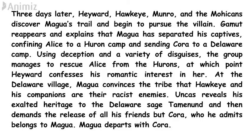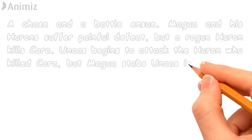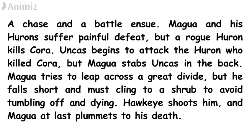Uncas reveals his exalted heritage to the Delaware sage Tamenund and demands the release of his friends, but by tribal rules Magwa departs with Cora. A chase and battle ensue — Magwa and his Hurons suffer a painful defeat, but a rogue Huron kills Cora. Uncas attacks the Huron who killed Cora, but Magwa stabs Uncas in the back. Magwa tries to leap across a great divide but falls short and clings to a shrub; Hawkeye shoots him, and Magwa finally plummets to his death.